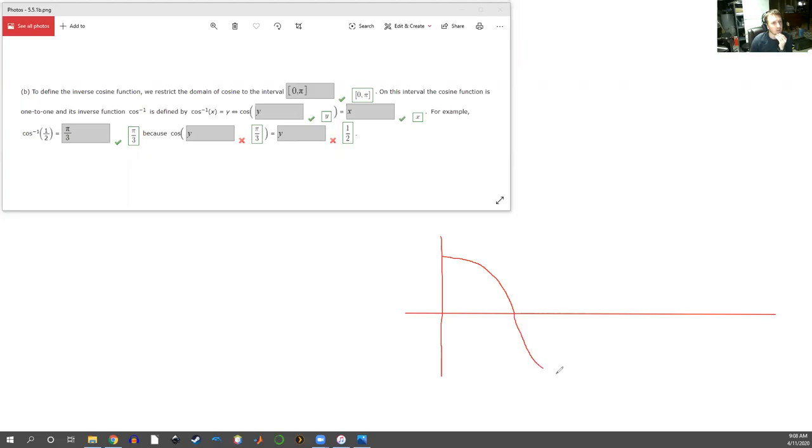It comes back down here, and at pi it's at negative 1, loops back up at 3 pi over 2, and then comes all the way back up. At 2 pi it's an angle of pi, pi over 2, etc.